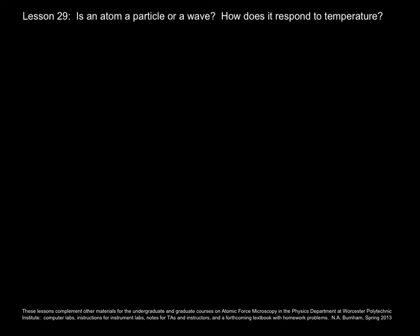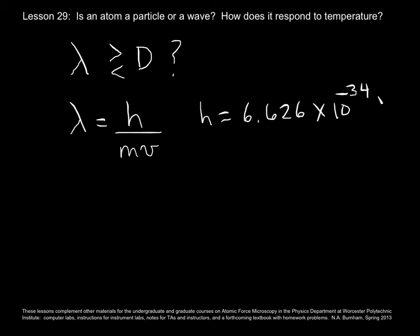A convenient criterion for answering the question of whether an atom is a particle or a wave is to say, is that wavelength less than or greater than the diameter of that atom? Now, in quantum mechanics, you can express the wavelength of something as Planck's constant over the mass times the speed of that something. Well, Planck's constant is equal to 6.626 times 10 to the minus 34 joule seconds.